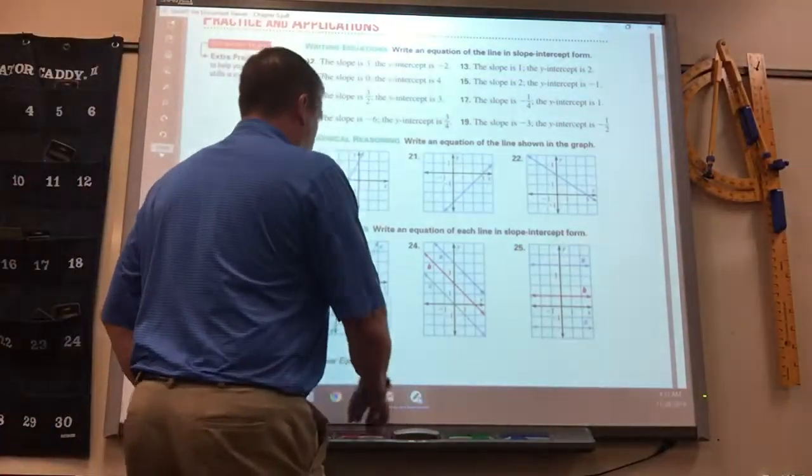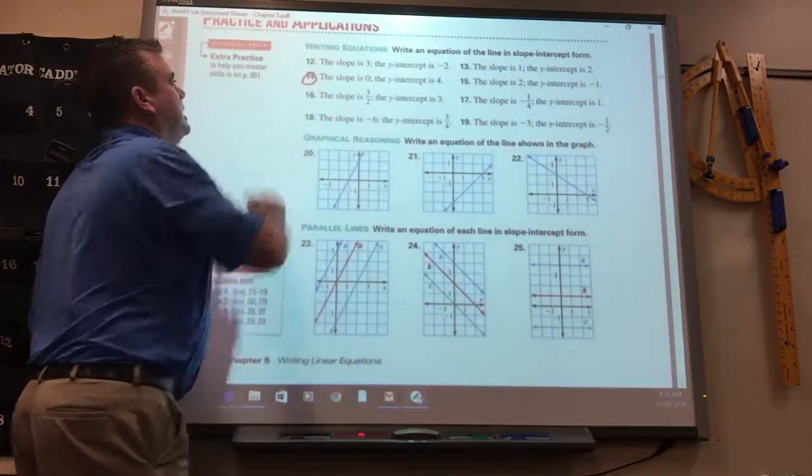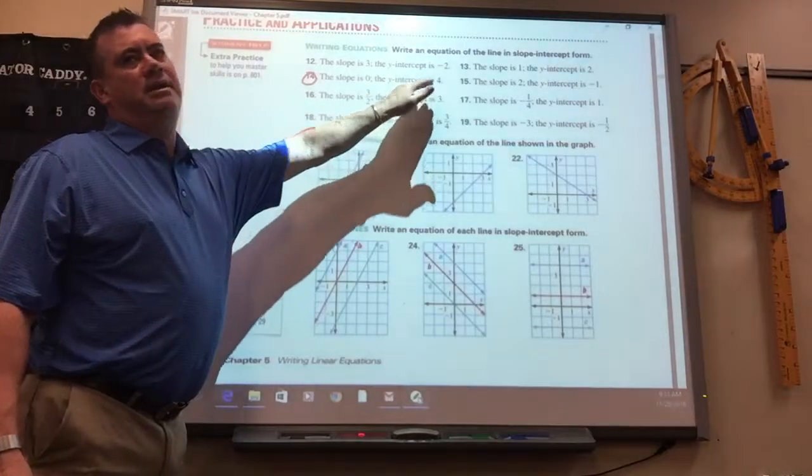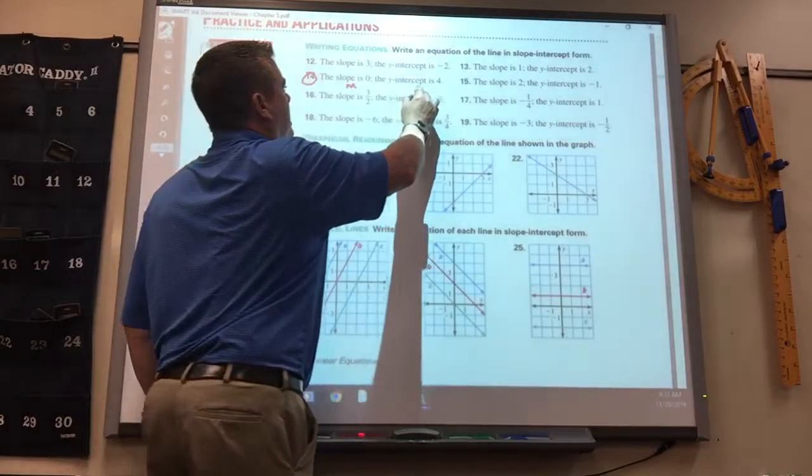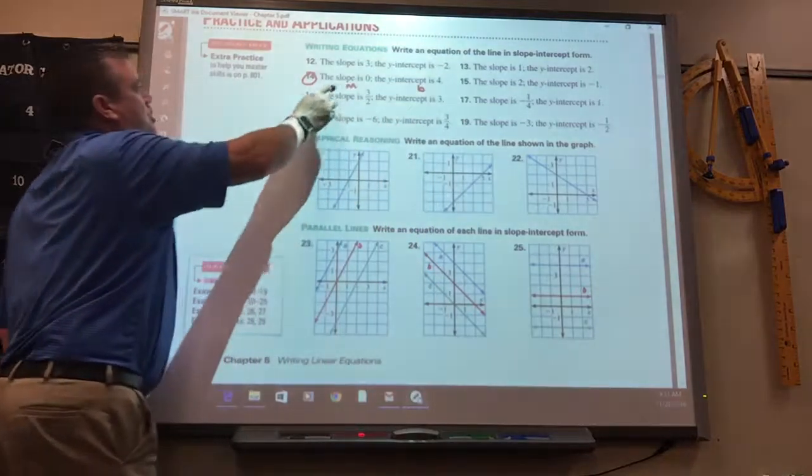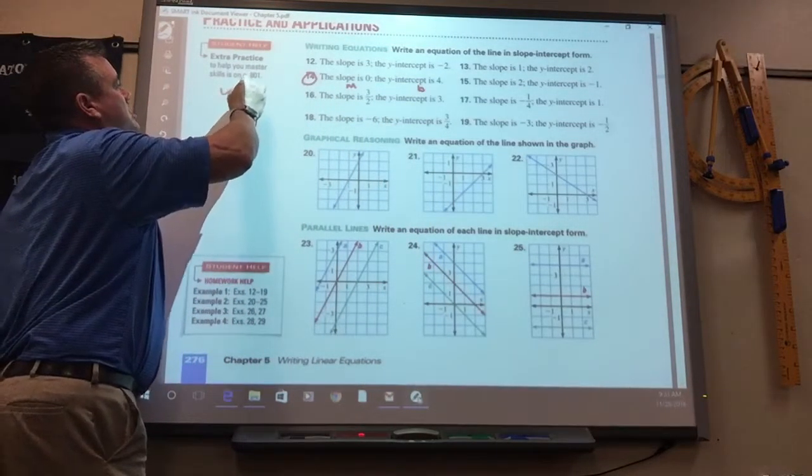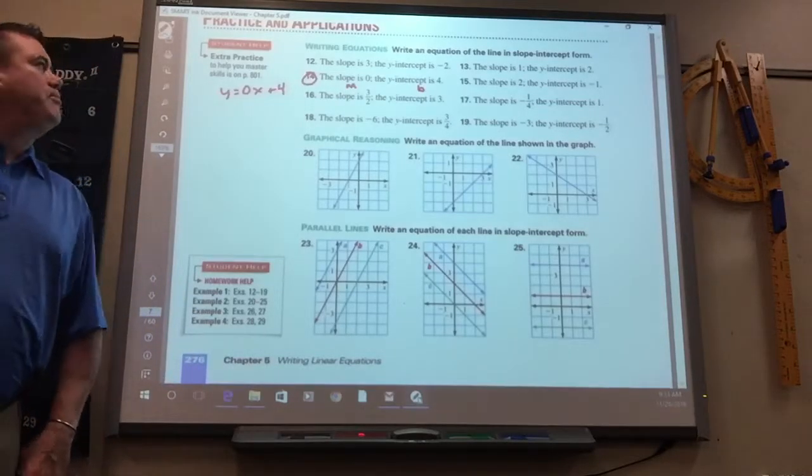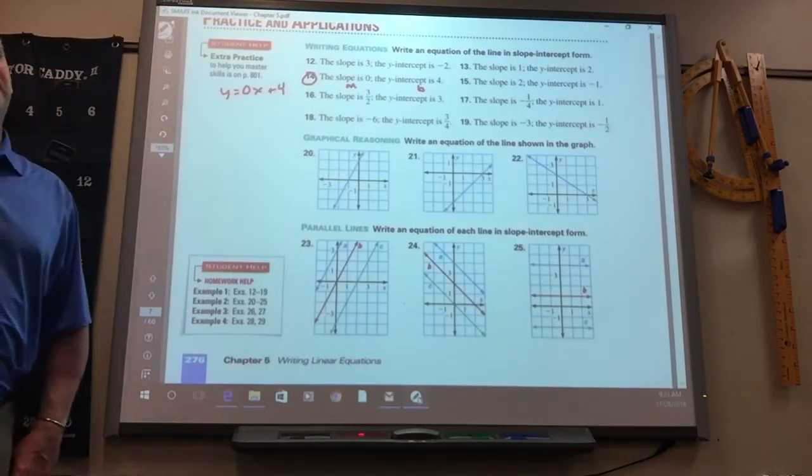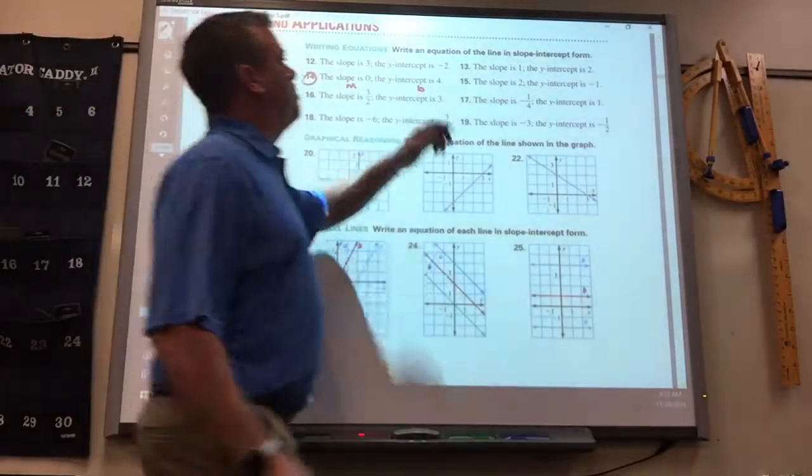The first 14 through 19, they give you M and B. Slope is M, remember, B is the Y-intercept. So this would be Y equals 0X plus 4. Now, we don't have to simplify it because it does say to write it in slope-intercept form.